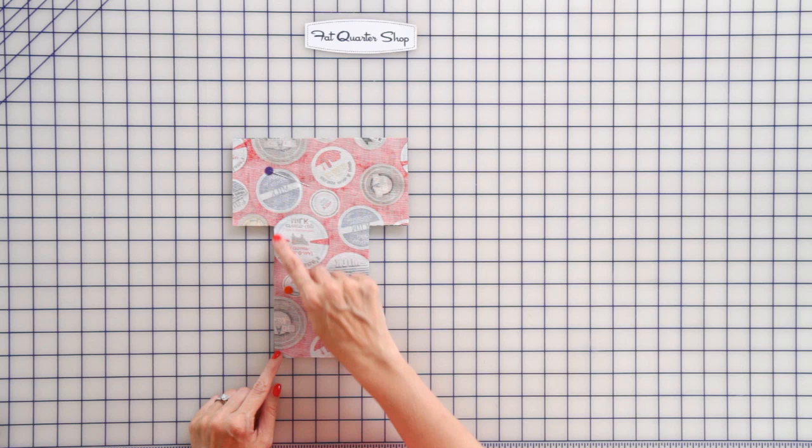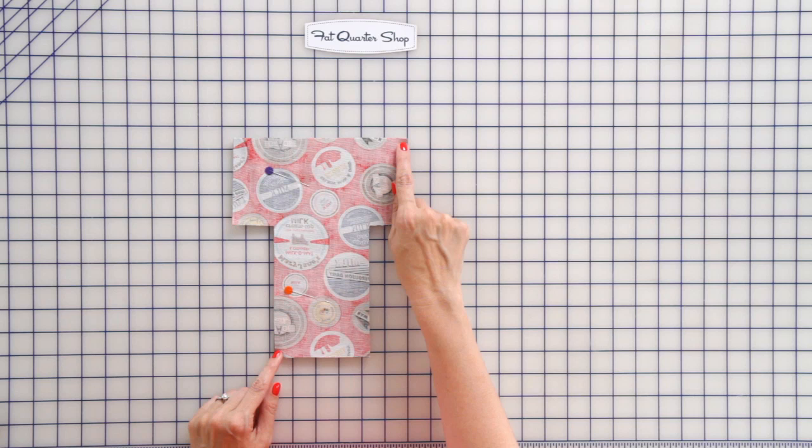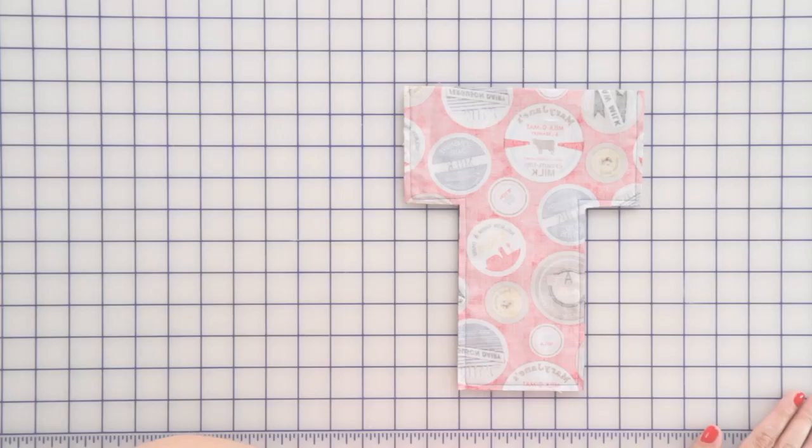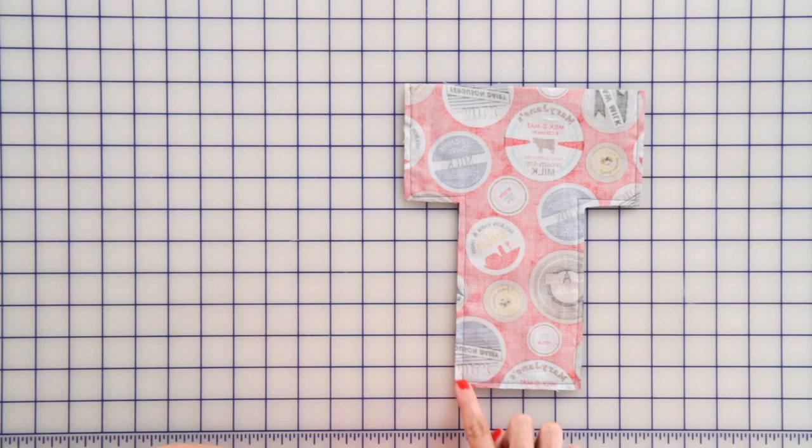Then we're going to stitch a quarter inch away around your template. We're going to leave the opening open and back stitch when we start and when we end.